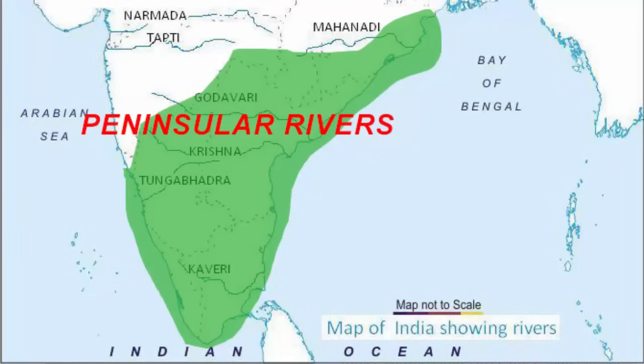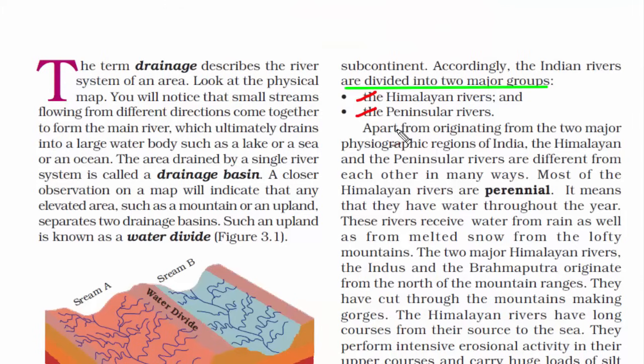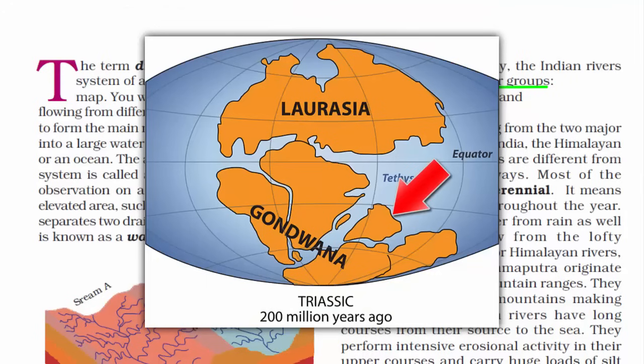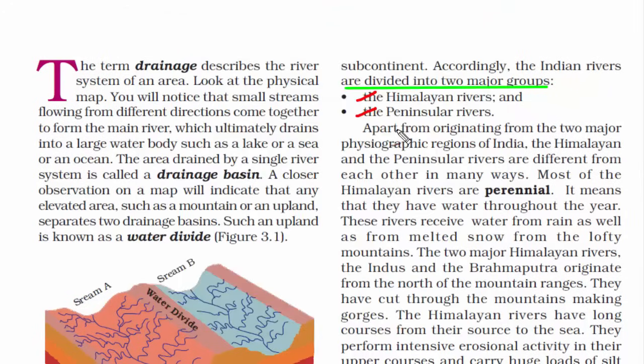I'll show it to you on a map. The Himalayan rivers originate in the Himalayas, primarily due to the melting of ice and glaciers, though rain is also a source. On the other hand, peninsular rivers originate in the peninsula region, which was part of the Gondwana land. Therefore, the rivers here are much older than the Himalayan ones.